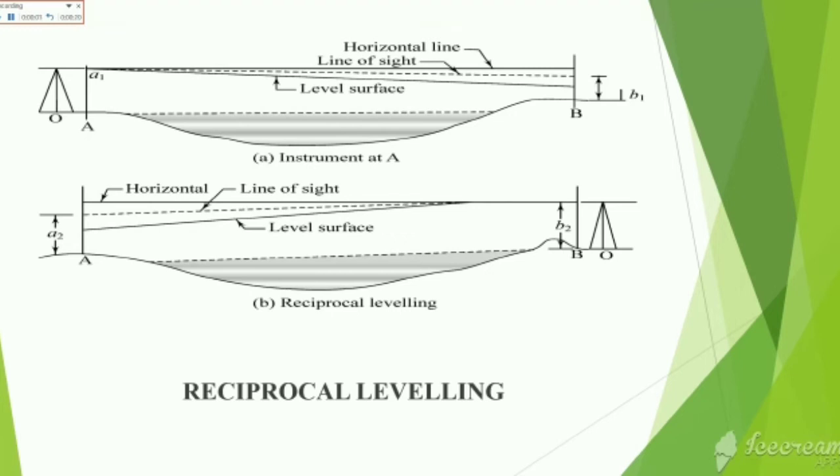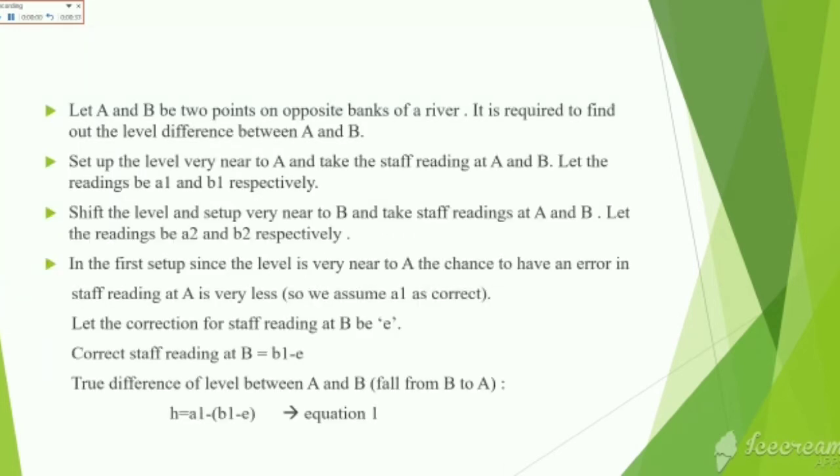Now, let us consider two points A and B on the opposite banks of a river. The level is set up near to A and the staff readings of A and B are taken as a1 and b1 respectively. Now, the level is shifted to B and the staff readings of A and B are taken as a2 and b2 respectively. In the first case, as the level is set up near A, the error of staff reading of A is less and considered as a1 itself. Let e be the error of staff reading of B. Correct staff reading of B is equal to b1-e. True difference of level between A and B, that is h, is equal to a1-b1+e. Let it be the first equation.